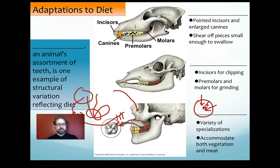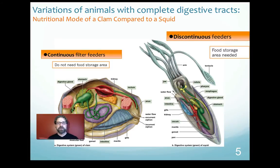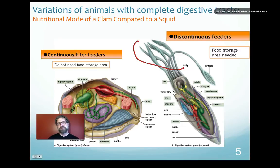Each of these animals has specialized adaptations to ingest and utilize nutrients. The clam is a continuous feeder using a siphon to bring food in, while the squid hunts using its tentacled arms to capture prey. These are specialized adaptations related to diet.